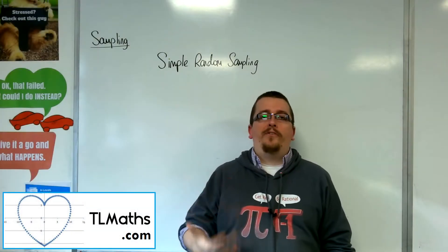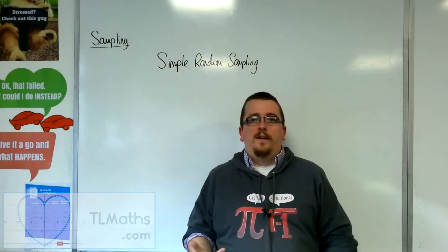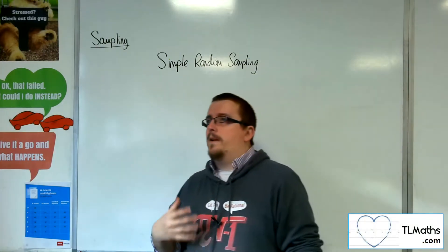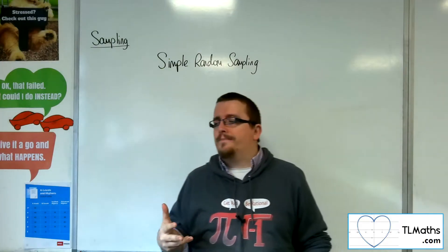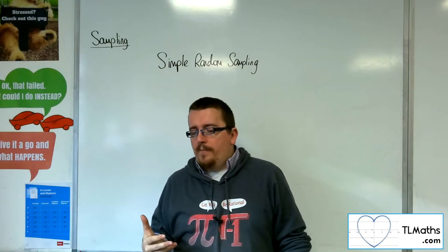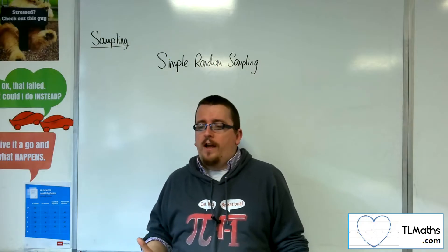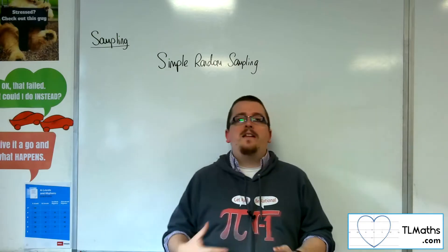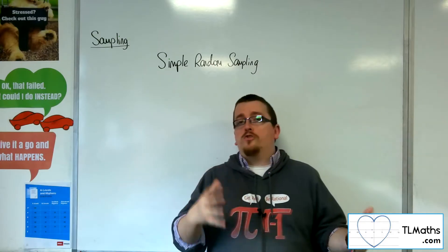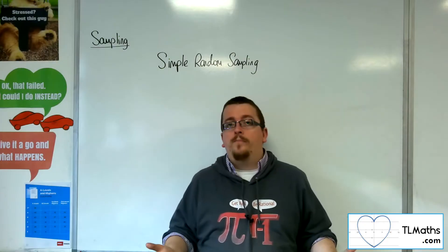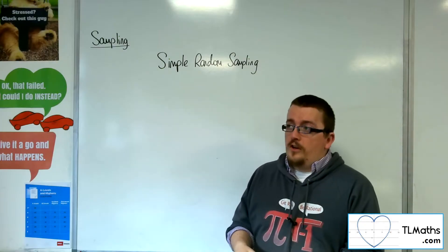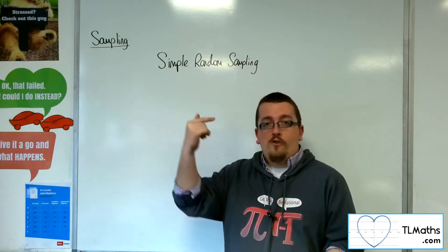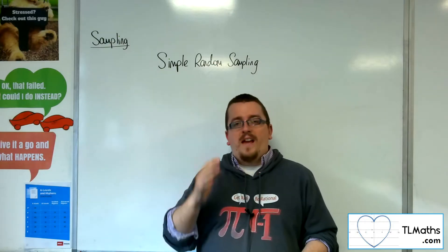If you were to use simple random sampling to select a sample, so if we try and do it from a context situation: if you've got 100 employees in a company and you wanted to gain their views and you just wanted a sample of, say, 10 of them, then what you could do is first of all assign a number to all 100 employees from 1 to 100. That would be the first step.